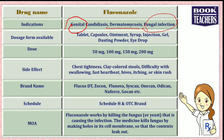There is a wide variety of dosage forms in which fluconazole can be given. It can be given as tablet, capsule, ointment, syrup, and injection. It is also available in gel form, dusting powder, and eye drops.